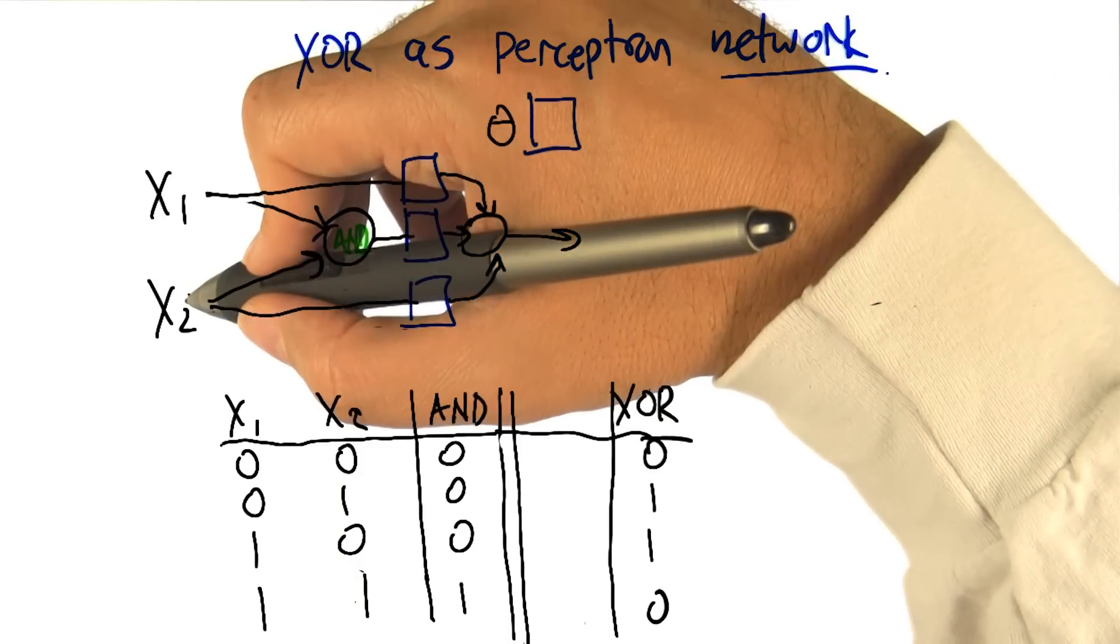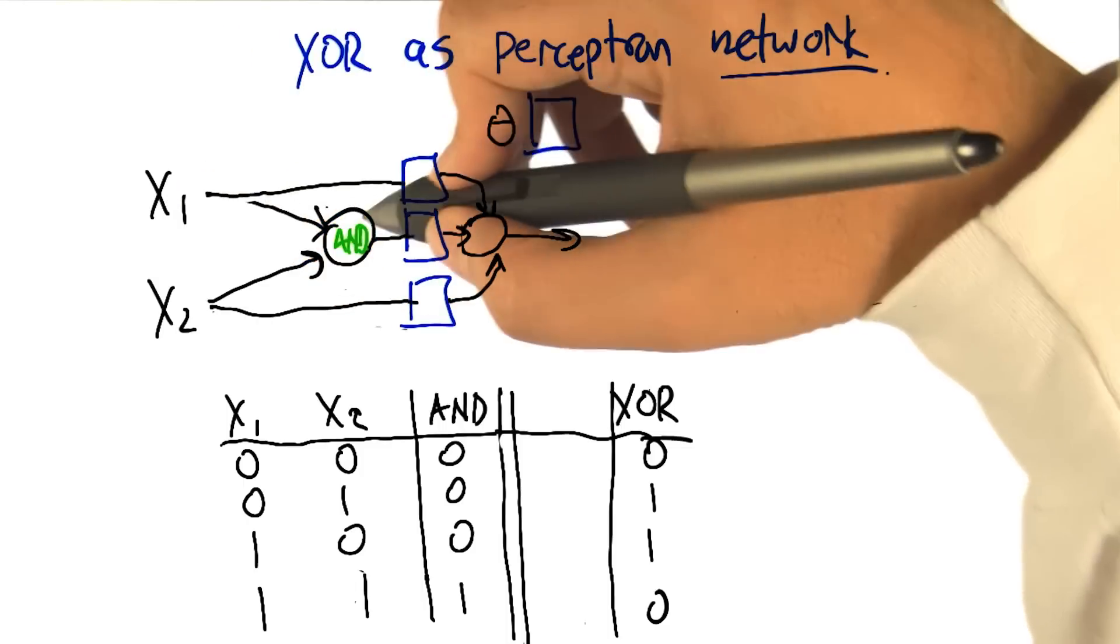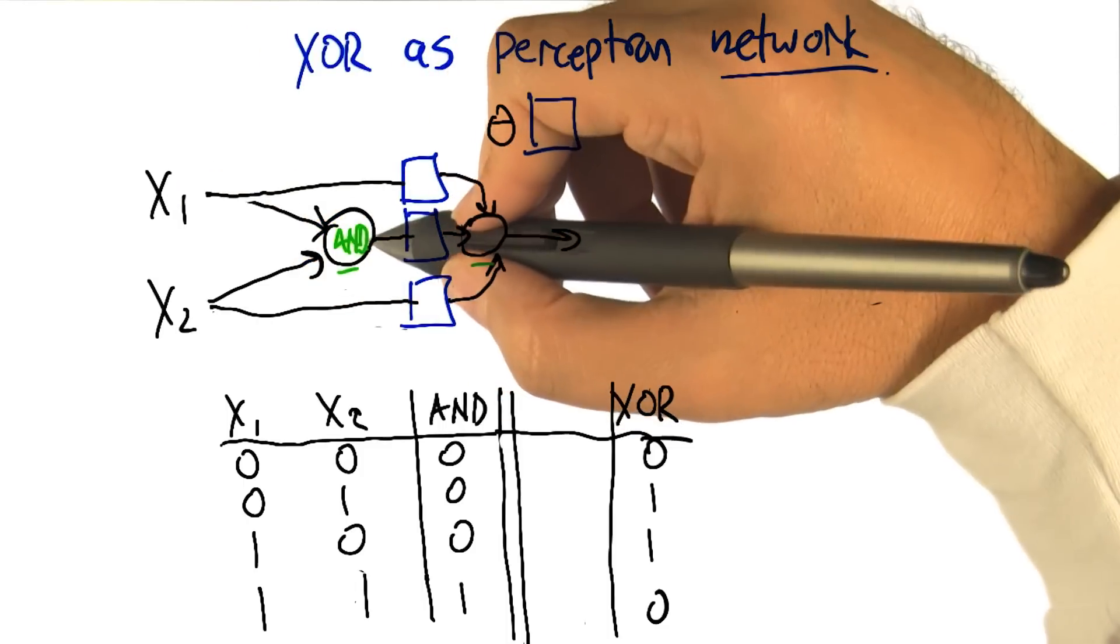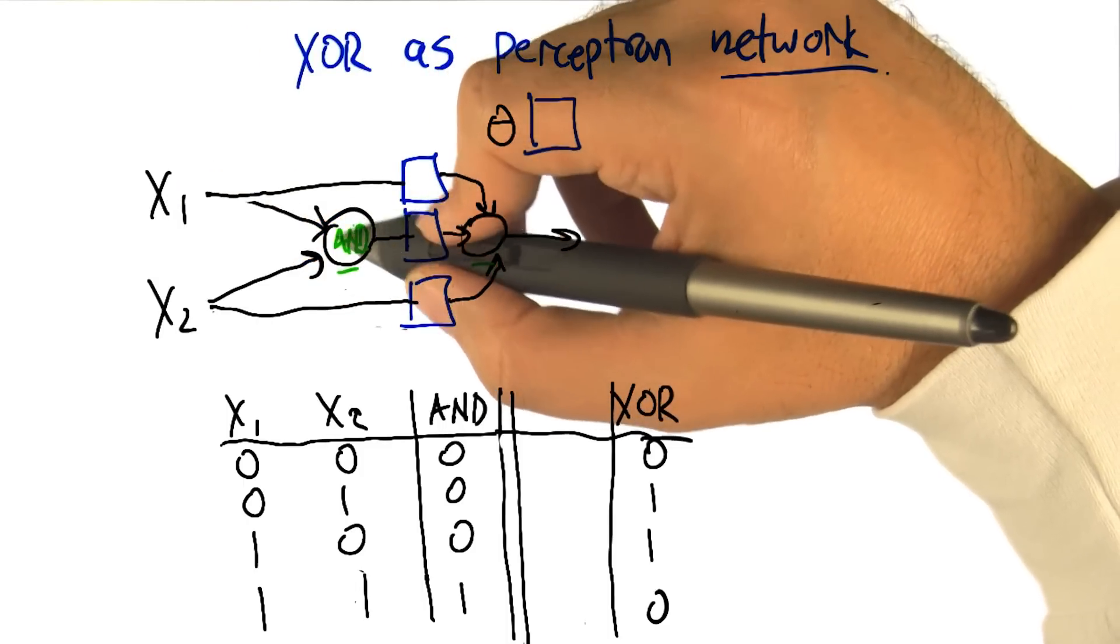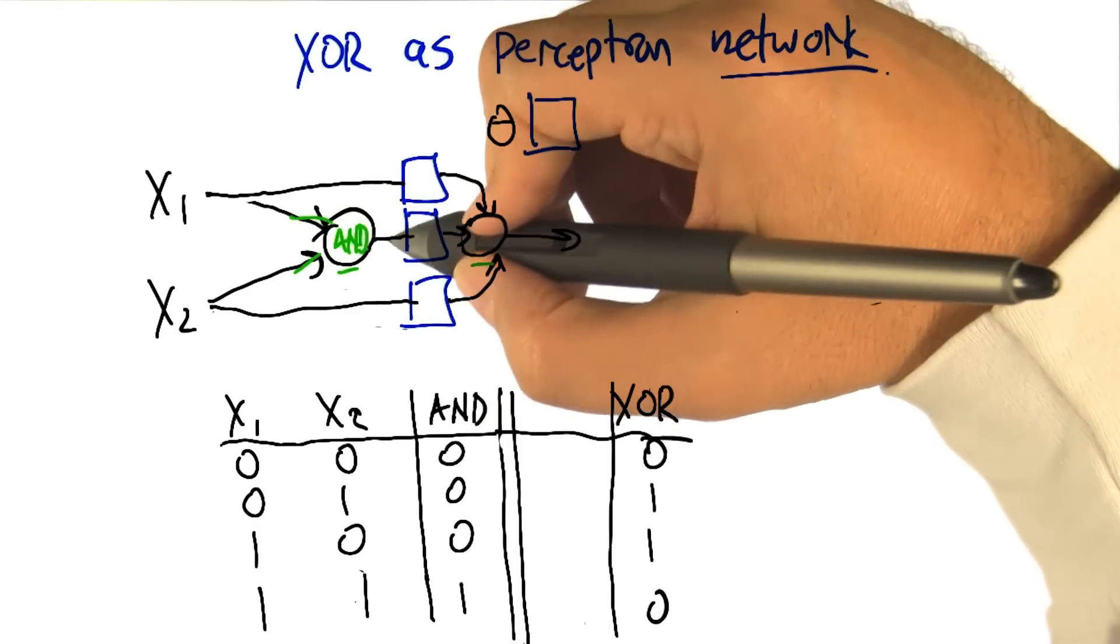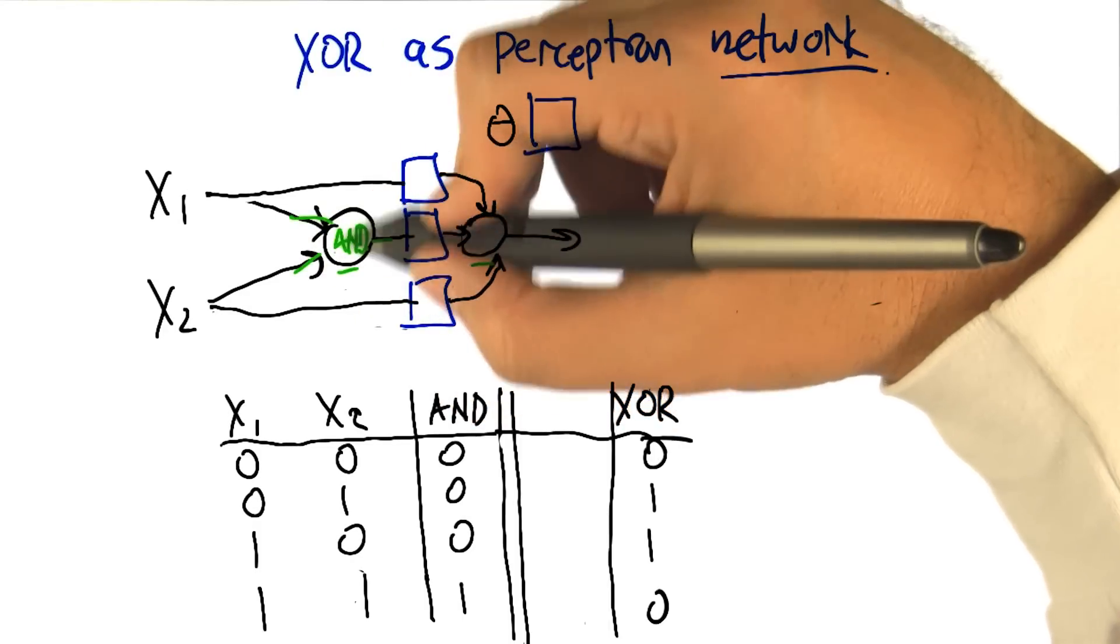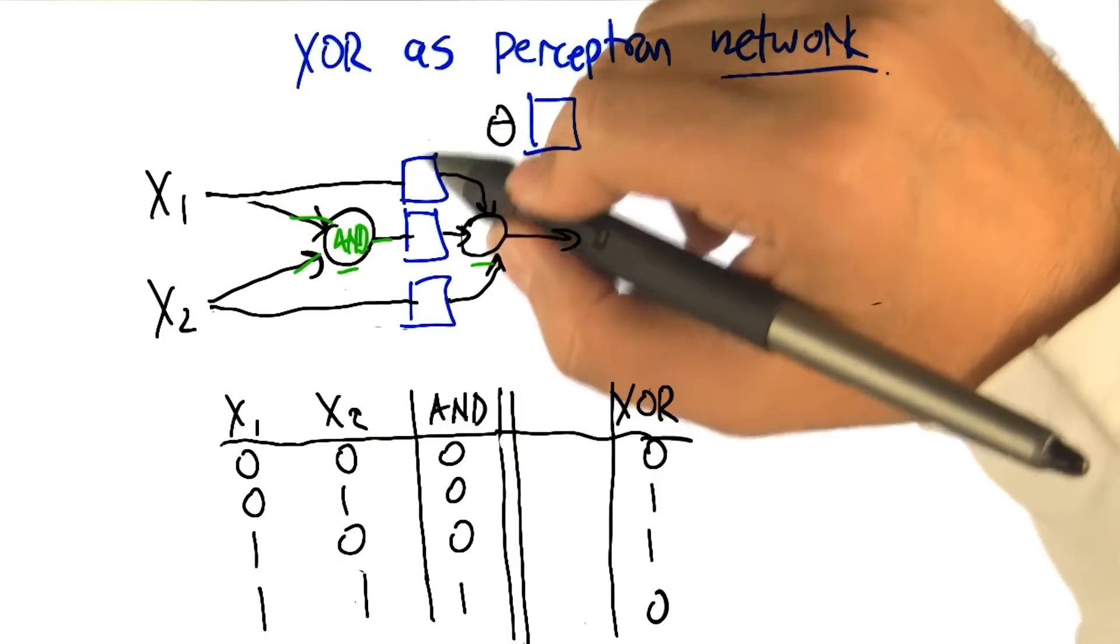We've got X1 and X2 as our inputs. We've got two units. This first unit is just going to compute an AND and we already know how to do that. We've already figured out what weights need to be here and here and what the threshold needs to be so that the output will be the AND of those two inputs. So that's all good.